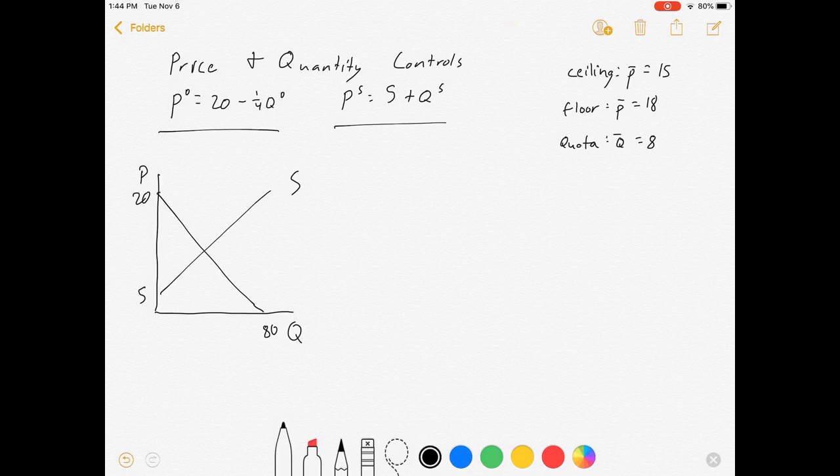So let's do our ceiling first. We fix price at $15. Oops, I just drew a floor. We fix price at $15, which is below our equilibrium. If you put a ceiling above equilibrium, it doesn't do anything, obviously, because prices don't want to rise higher. And so if I just want to find the shortage or the surplus, well, in this case, let's figure it out.